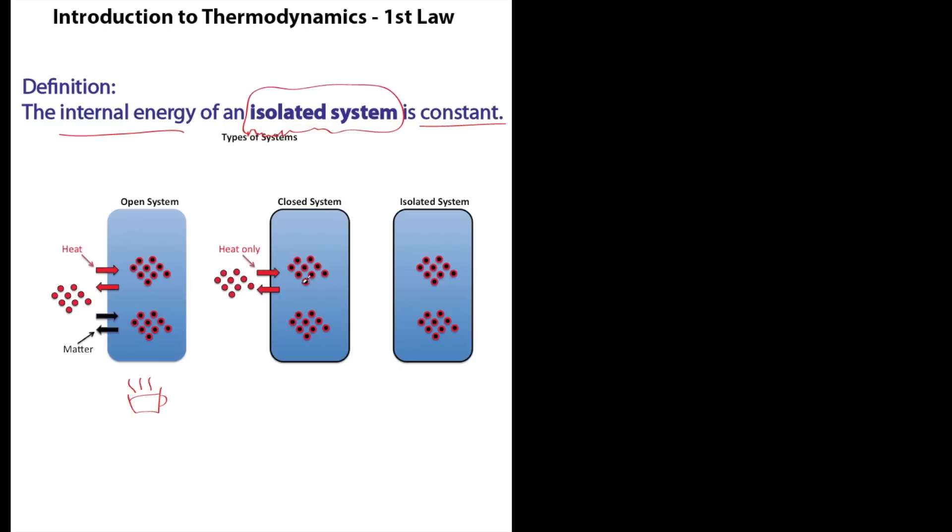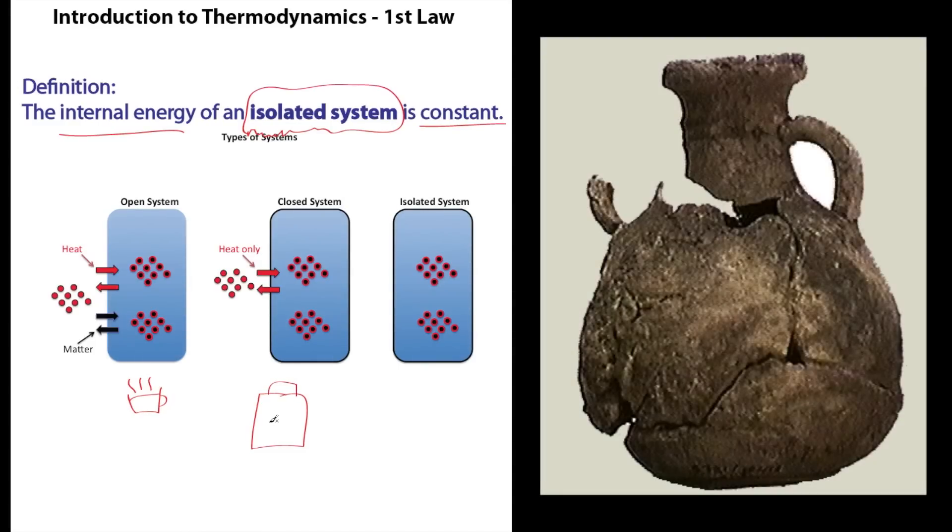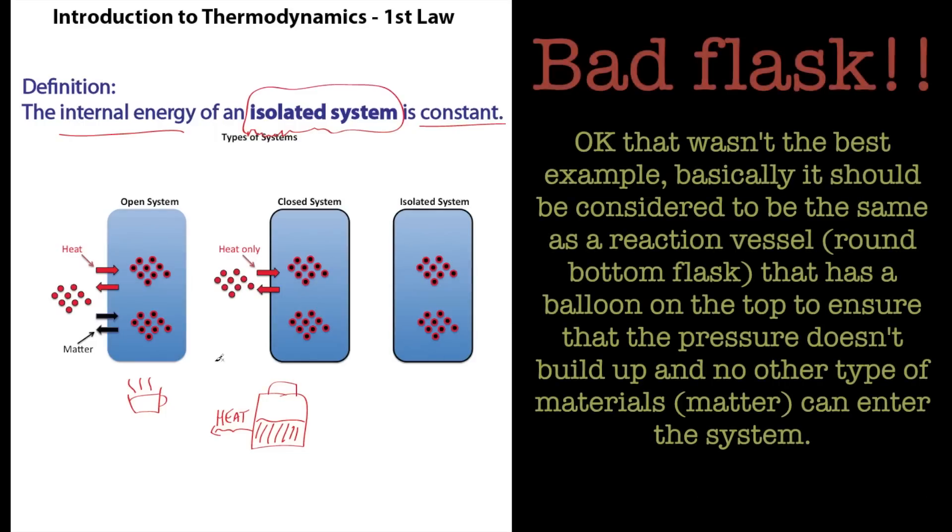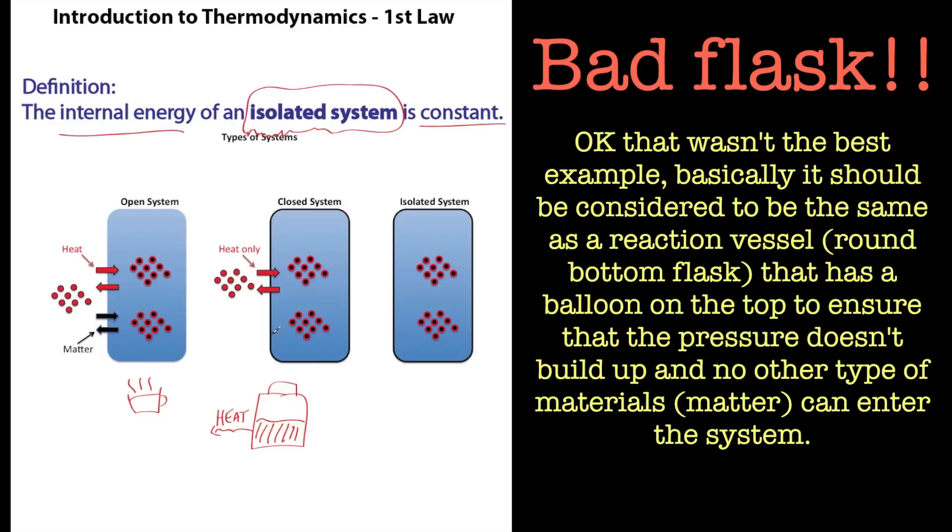Closed system. Heat can get in, matter can't get out. Let's think of that as a really bad flask. We've got a flask full of coffee. It's not very good. And you get a little bit of heat loss there. So over time it'll cool down to whatever surrounding temperature is, and it's a closed system so matter can't get in and out but heat can get in and out.